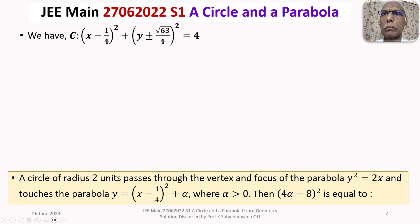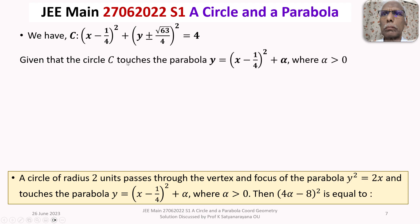Given that this circle C touches another parabola y = (x − 1/4)² + α, where α > 0, look carefully at both equations. Because (x − 1/4)² appears in both the circle and the parabola, the circle touches the parabola at a point whose x-coordinate is 1/4.